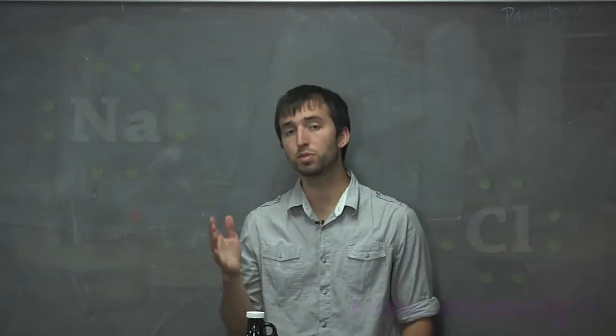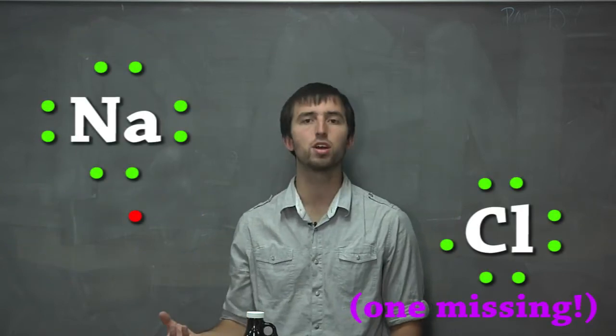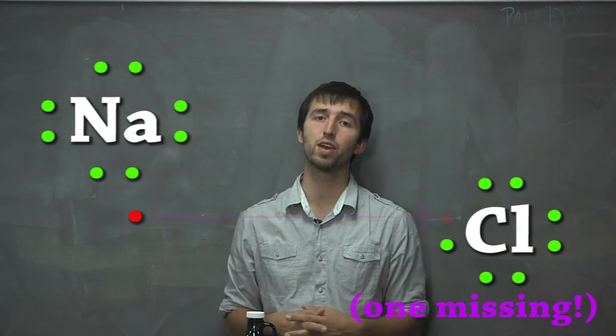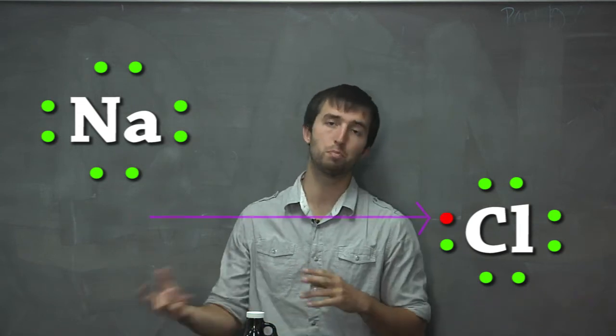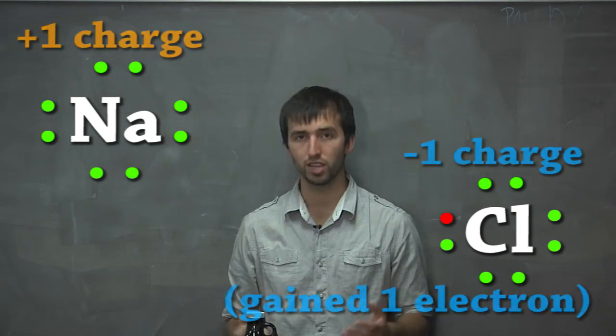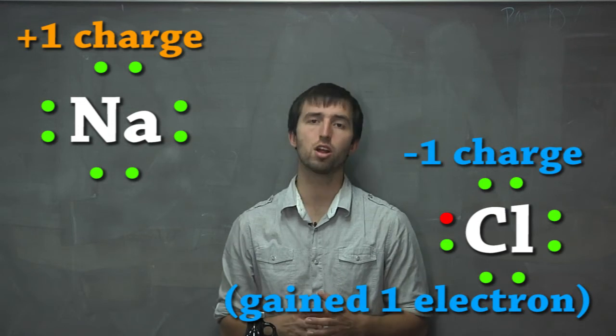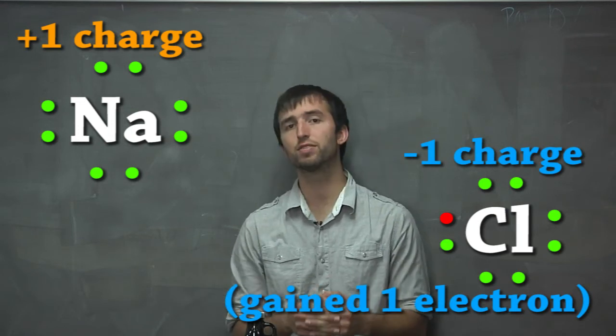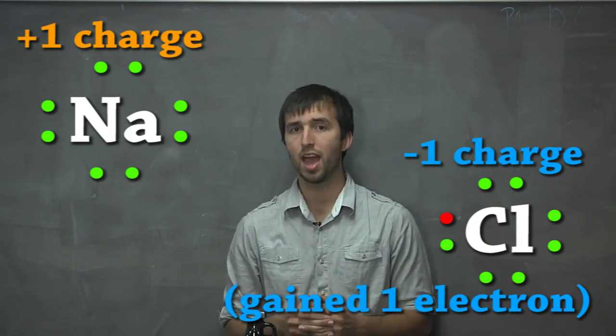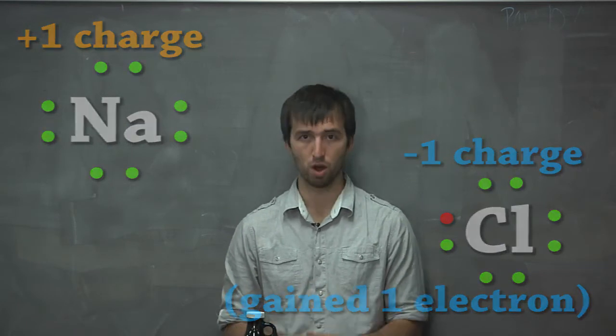Conversely, the compounds in group seven normally need one more electron to get to a noble state configuration. So what they're going to do is borrow an electron to be more stable. That extra electron has a negative charge, and gives chlorine, fluorine, and iodine ions a charge of negative one.